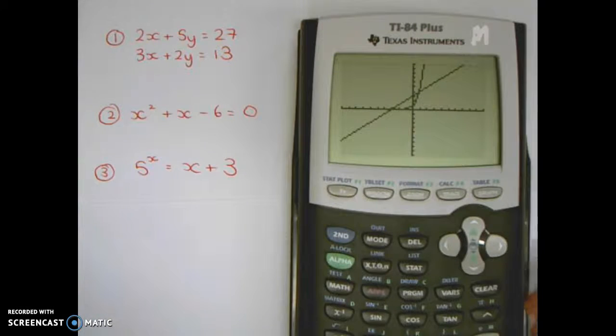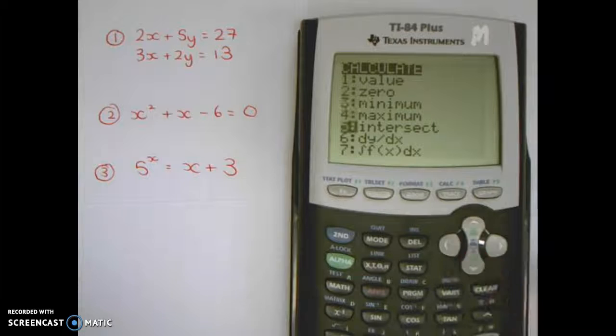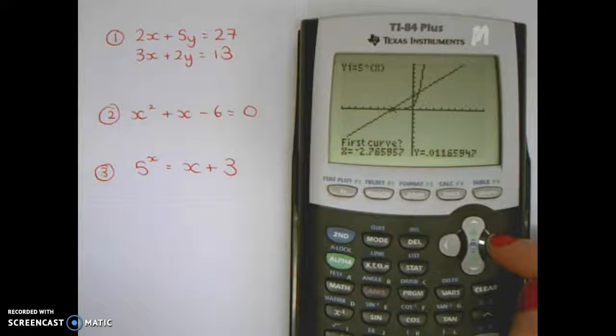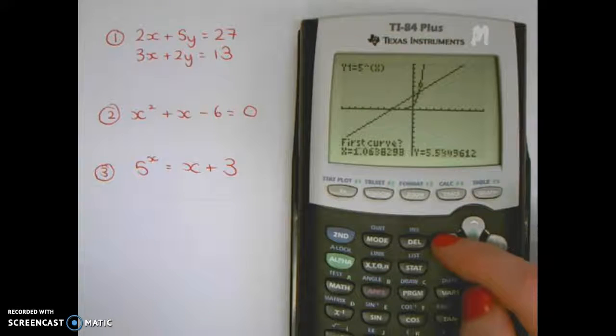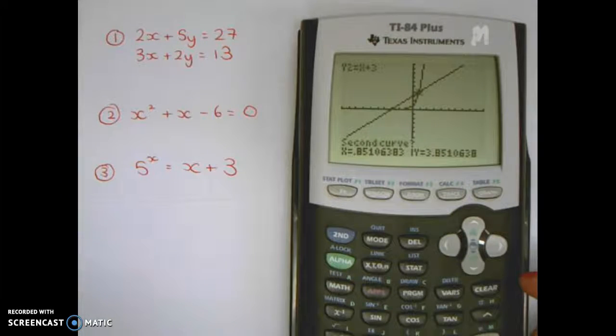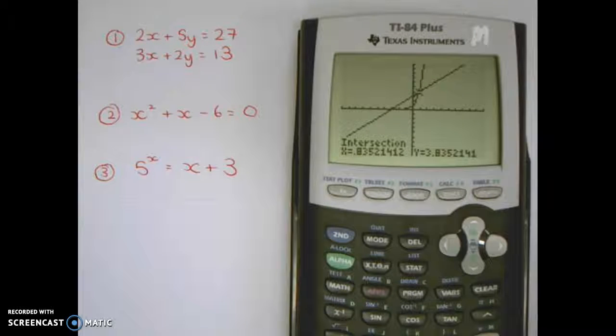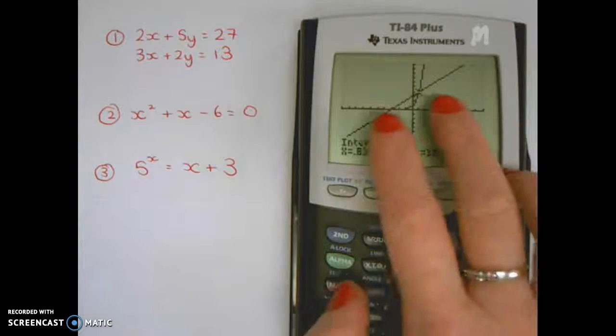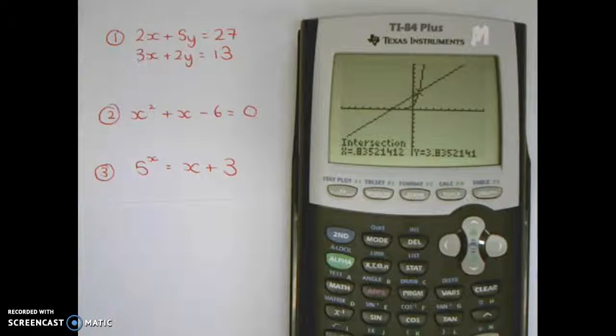To find the other intersection, we can calculate the other one. Let's see what this one is. Go to somewhere roughly around that one, enter, enter, enter. That answer is 0.835, which we got with the solver. But this shows you very clearly there are two answers, and you can get them without guesswork or thinking about how many answers there might be.